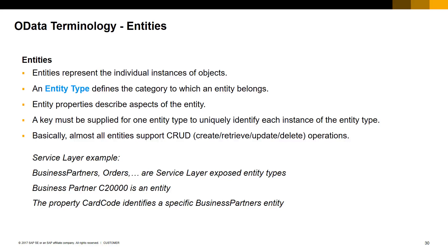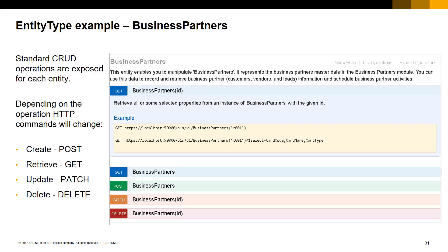Many other properties like CardName, CardType, etc., will define the characteristics of a specific business partner entity. Almost all entities support create, retrieve, update, and delete operations. In our service layer, entities like business partners, orders and so on will expose these operations. Here we can see the business partners entity type in the service layer API reference document, showing the operations available. The HTTP commands GET, POST, PATCH, or DELETE are used. We can see that to retrieve a specific business partner based on a key, we use the HTTP GET command.